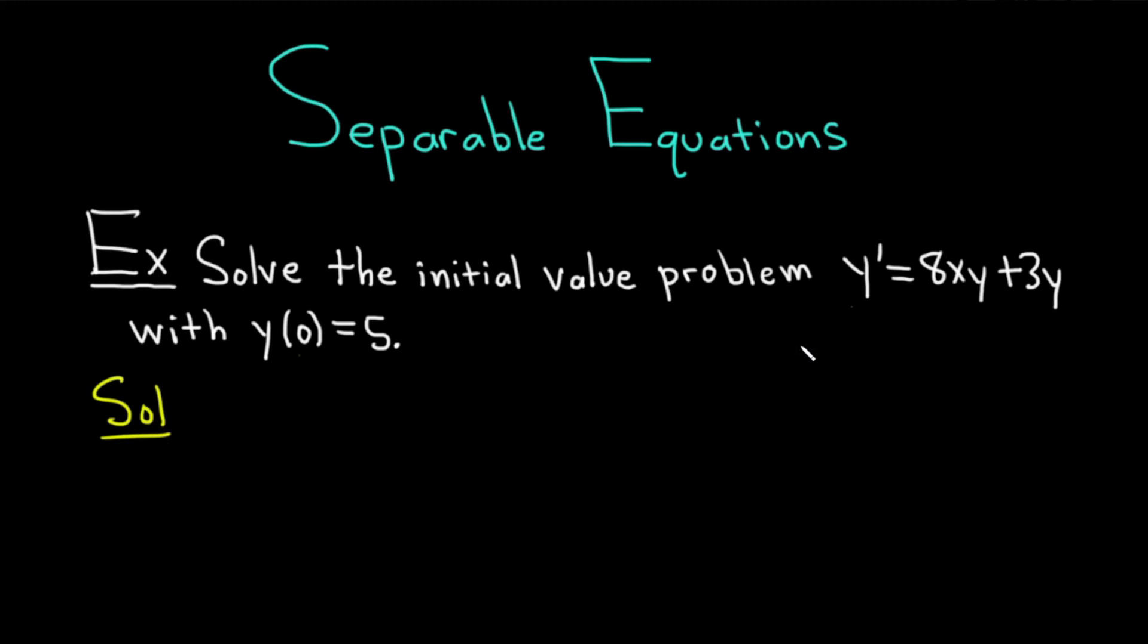This is called an initial value problem because we're given the differential equation, which is y' equals 8xy plus 3y, together with this condition, y of 0 equals 5. This condition is called an initial condition. So basically, we solve the differential equation. At the very end, we use this condition to find the value of the constant that we get.